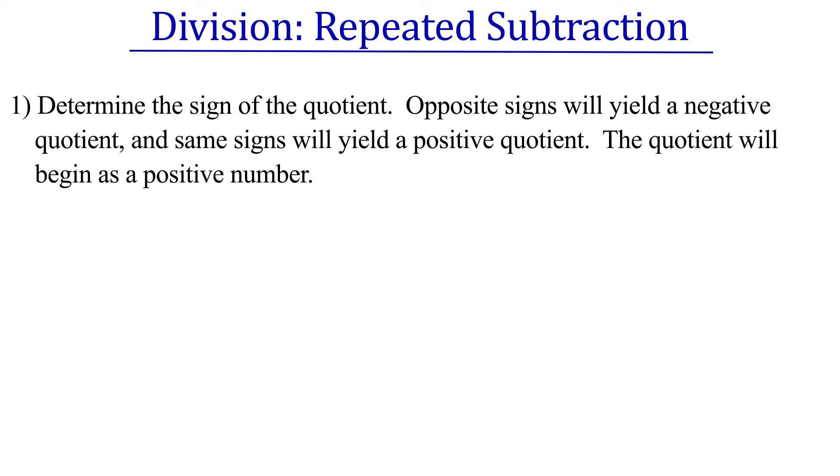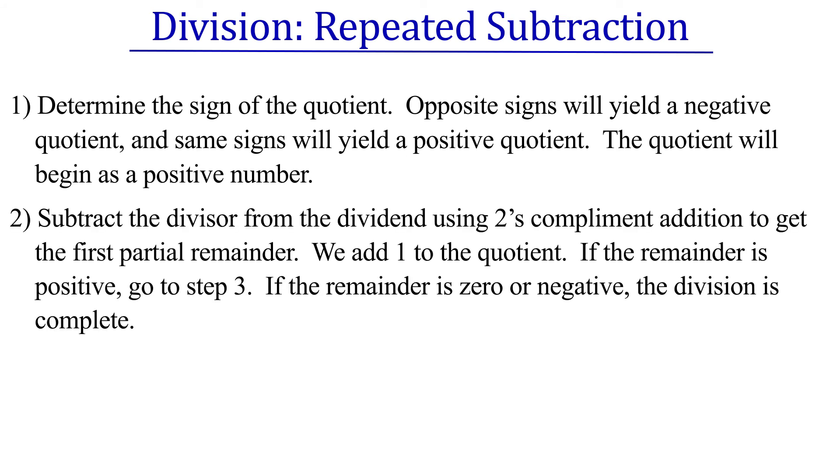Determine the sign of the quotient. Opposite signs will yield a negative quotient, and same signs will yield a positive quotient. The quotient will begin as a positive number. Step two. Subtract the divisor from the dividend using two's complement addition to get the first partial remainder. We add one to the quotient. If the remainder is positive, go to step three. If the remainder is zero or negative, the division is complete.